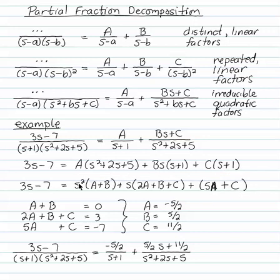And now I can say, compare the coefficients of the powers of S on the left with the coefficients of the powers of S on the right. A plus B has to be 0. There's no S squared on the left. 2A plus B plus C has to be 3, because that's the coefficient of S on the left. And 5A plus C has to be minus 7, because that's the constant on the left, equaling the constant on the right. You have three equations, three unknowns here. You have to do a little work to solve this.